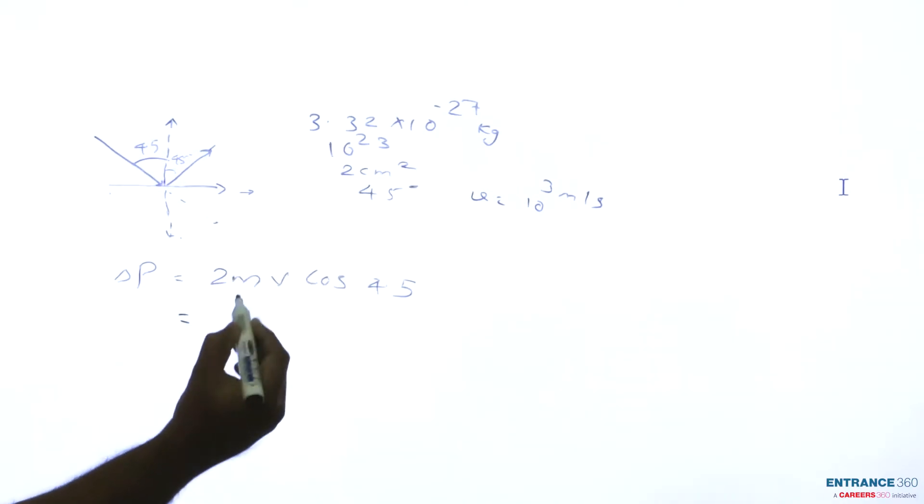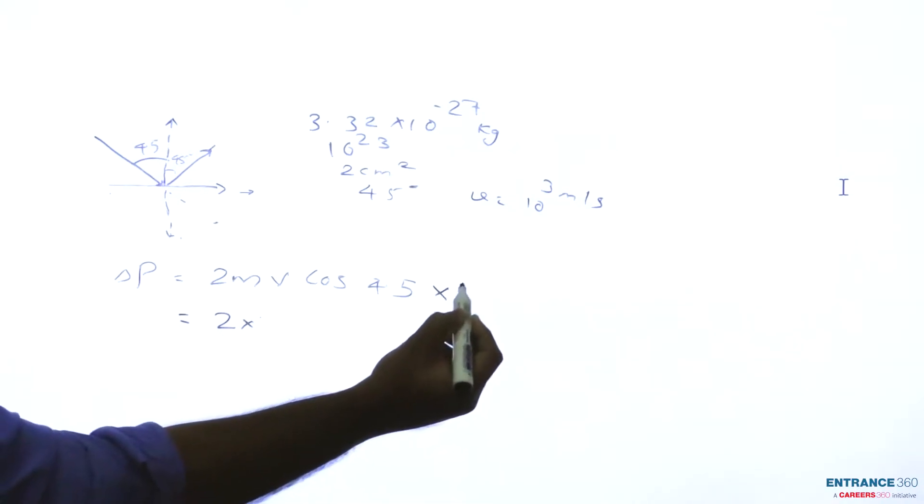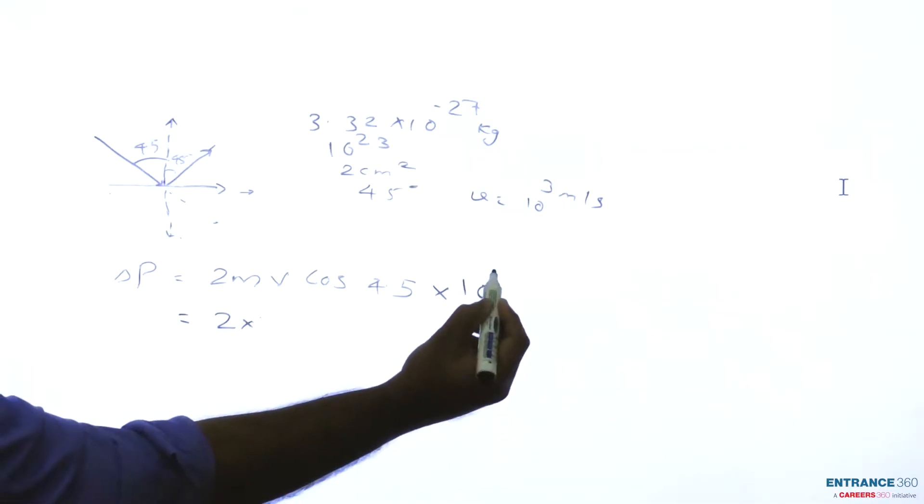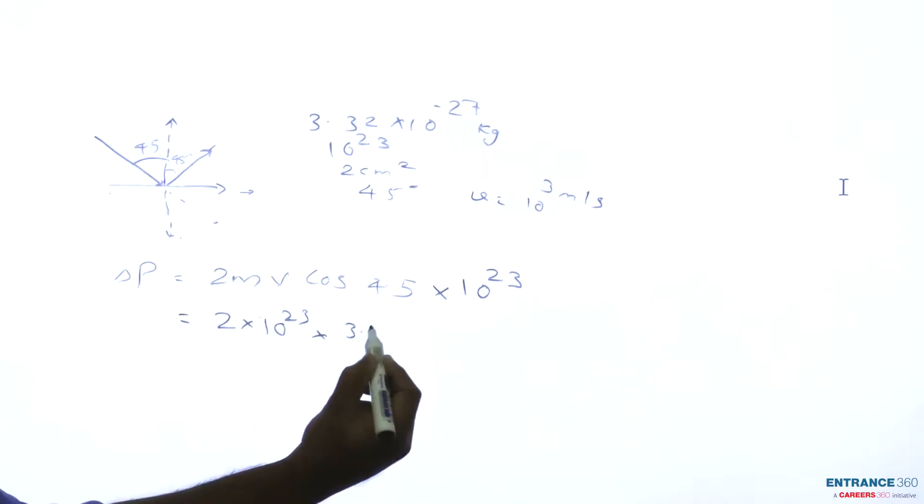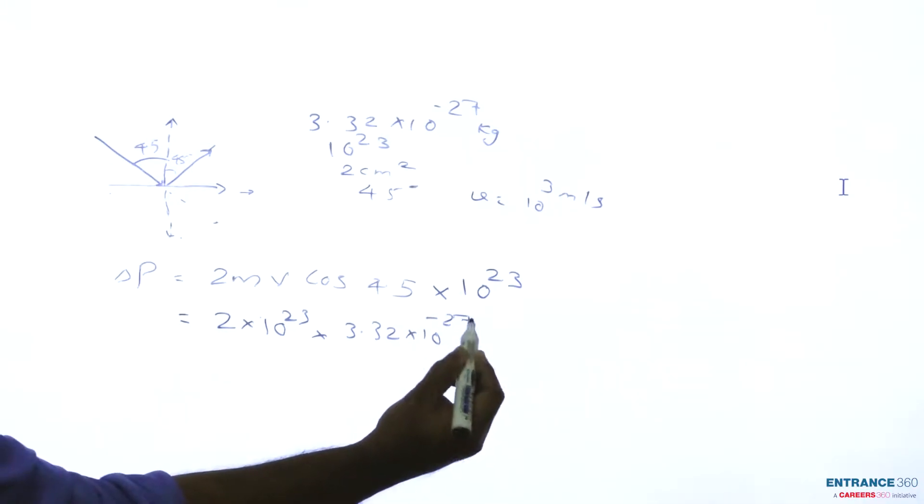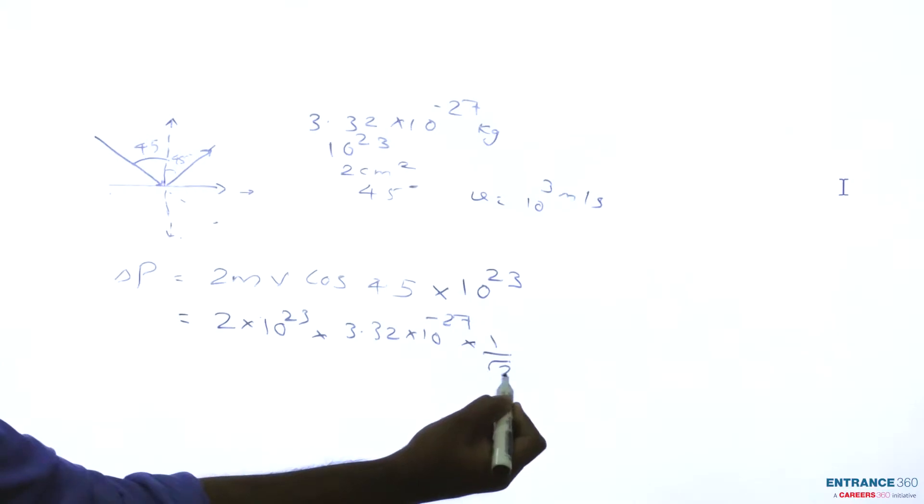Every value is directly given: 2 × 10^23 hydrogen molecules × 3.32 × 10^-27 × 1/√2 (cos 45° is 1/√2).